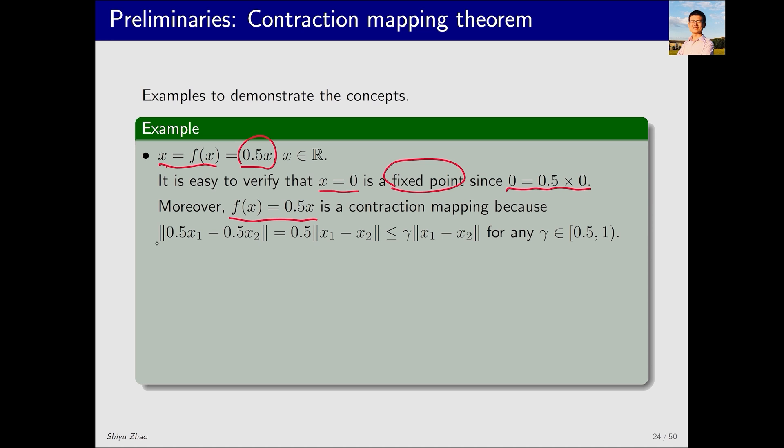For any x1 and x2, the norm of 0.5x1 minus 0.5x2 can be expressed as 0.5 times the norm of x1 minus x2. Here, 0.5 is less than a factor gamma, like 0.6 or 0.7, both of which are less than 1, fulfilling the definition of a contraction mapping. Therefore, 0.5x is a contraction mapping.